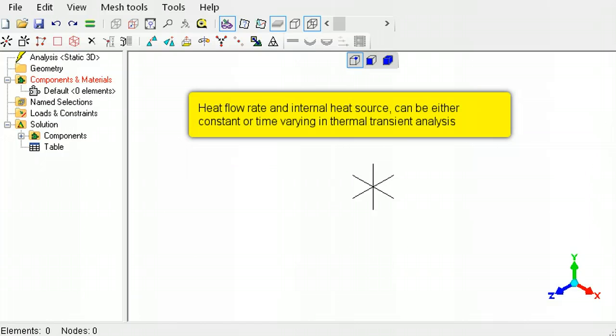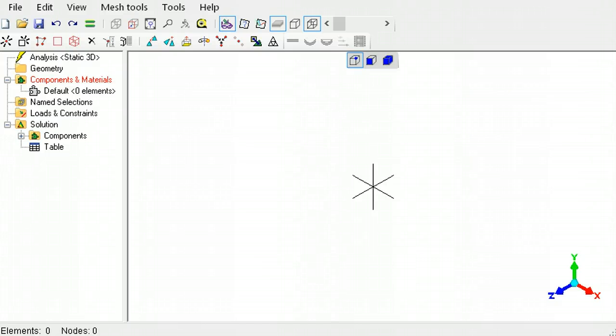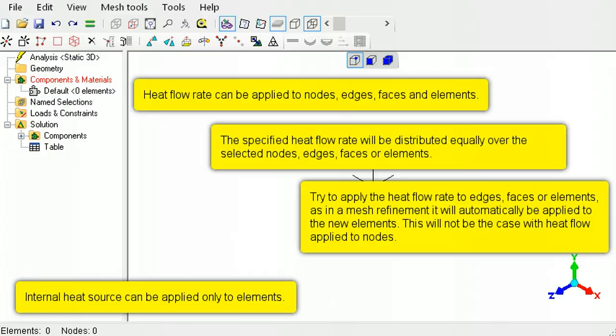In transient thermal analysis, they can either be constant or time varying. Heat flow rate can be applied to nodes, edges, faces, or elements.